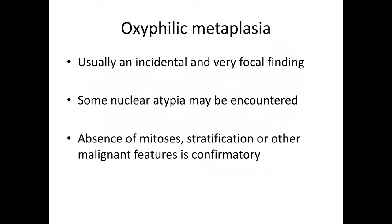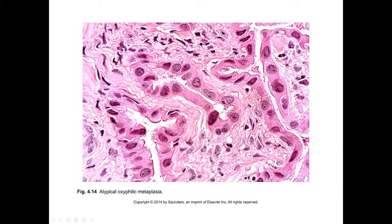Another benign entity is oxyphilic metaplasia. This is usually very focal and often won't merit mention, but can be of concern because sometimes there's nuclear atypia. Not seeing mitoses, stratification, or other malignant features can reassure one. At high magnification, cells with a little pleomorphism and very eosinophilic cytoplasm look quite different from normal endocervical cells. Wondering about clear cell carcinoma with eosinophilic cytoplasm or some variant of adenocarcinoma is understandable, but you would not see invasive, confluent growth or other features of malignancy.